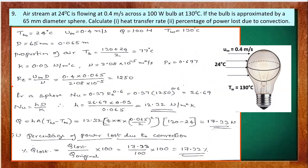Before going through this lecture, please go through the lecture on the data handbook for forced convection, where I have explained where to find this expression. Using Nu = 0.37 × Re^0.6, we get Nu = 26.69.